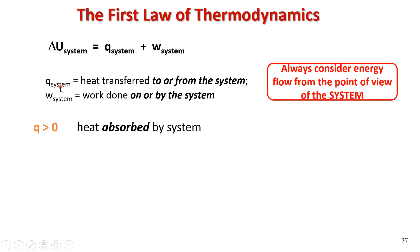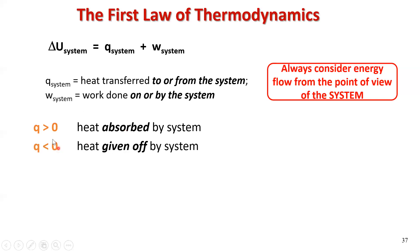Let's look at the two possibilities for Q. If Q is greater than zero — a positive value — the system is absorbing energy, so the system has more energy after the process than it had before. If Q is less than zero — a negative value — it means the system has given off heat, so the amount of heat the system has after the change is less than before.